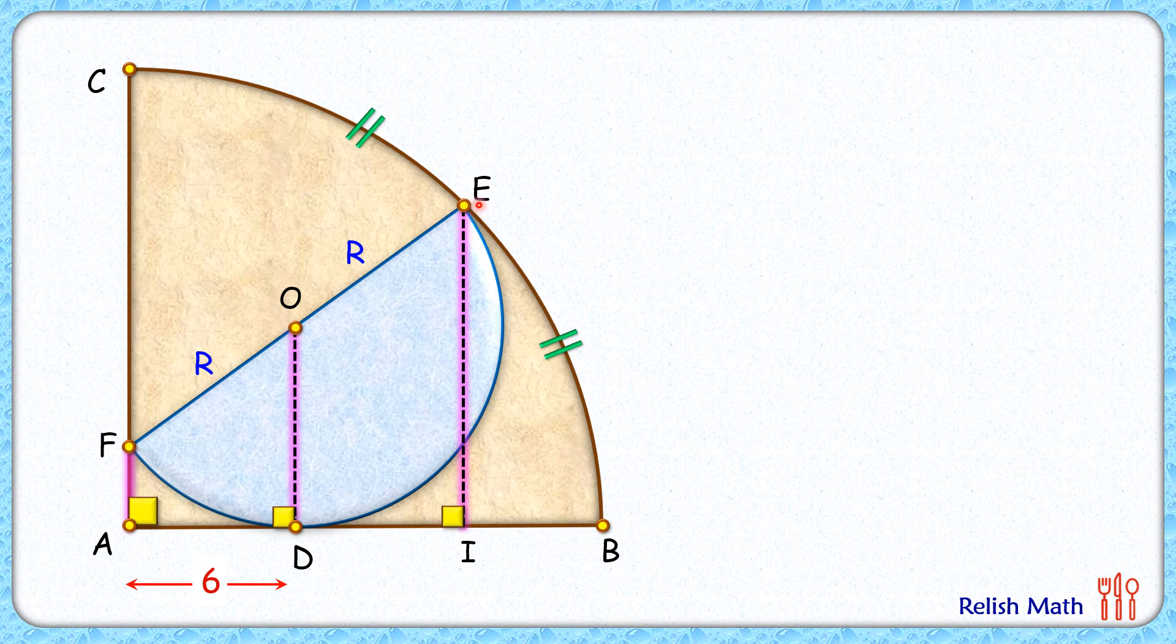By theorem, any other transverse which is passing between these three lines will divide in ratio 1 is to 1. Now AI is also a transverse so it will get divided in ratio 1 is to 1, or DI length will be 6 centimeters.